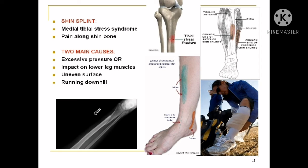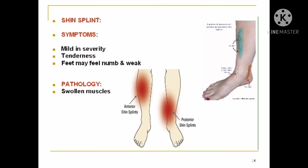Another painful condition of the anterior leg is the shin splint, or medial tibial stress syndrome, in which there are stress fractures. There is pain along the shin bone or tibia. The causes are excessive pressure or impact on the lower leg muscles, and walking or running on uneven surfaces or running downhill. The symptoms are mild in severity, with tenderness, and the feet may feel numb and weak. The pathology is swollen muscles. Differentiation from compartment syndrome can be made by X-ray, which can reveal stress fractures in the tibia.